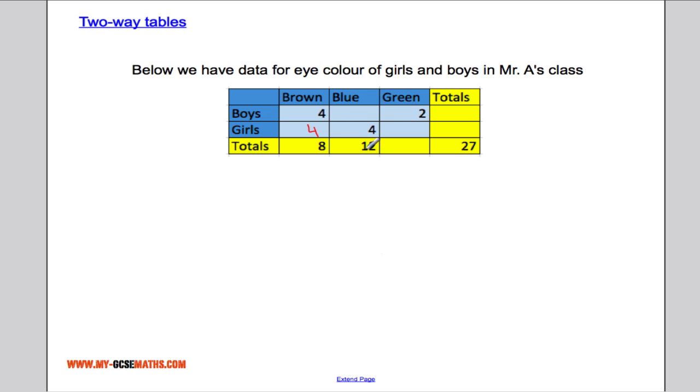Four girls have blue eyes, but there's 12 in total. That must mean there's eight boys who have blue eyes. Let me see. We've got 27 people in total. We've got eight here and 12 here. That's 20. That means the other seven must come from here.